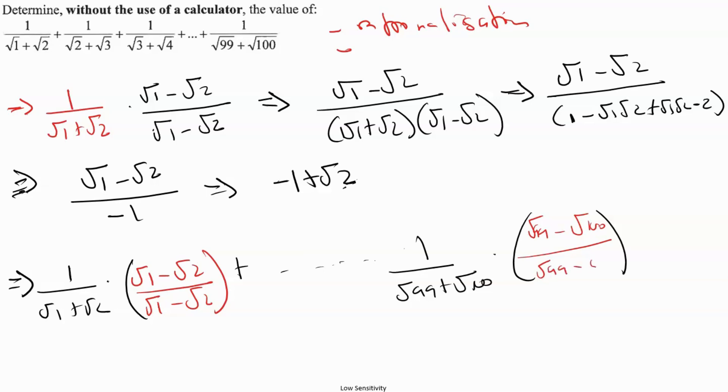So as we saw above, this becomes negative 1 plus root 2. If we go to the second expression here, this becomes minus root 2 plus root 3, and we continue until we get to negative root 99 plus root 100.